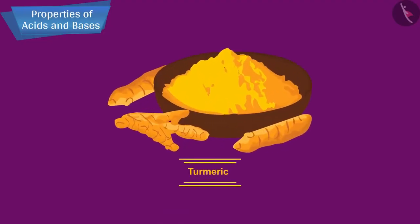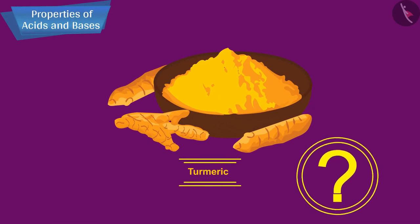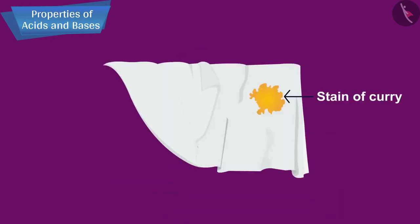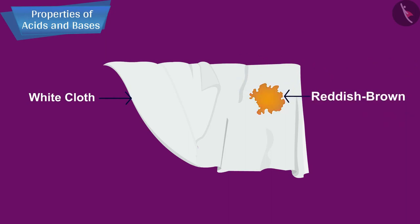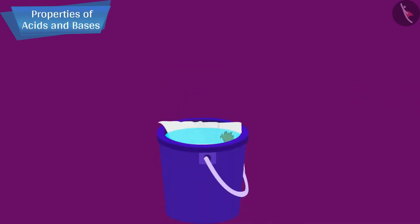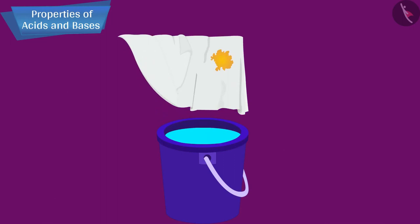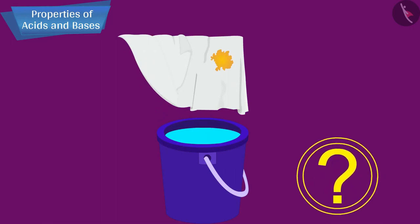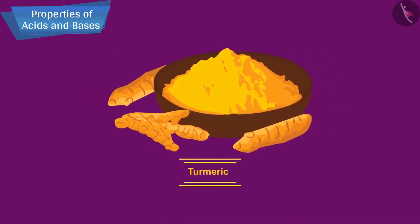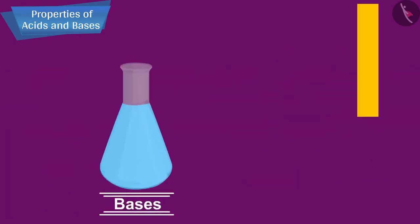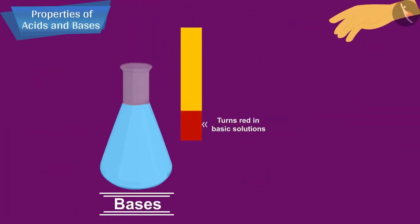Turmeric is another such indicator. Have you noticed that a stain of curry on a white cloth becomes reddish-brown when soap, which is basic in nature, is scrubbed on it? It turns yellow again when the cloth is washed with plenty of water, because the basic soap gets removed with water. So, turmeric is a natural indicator — it contains natural yellow dye and turns red in basic solutions.